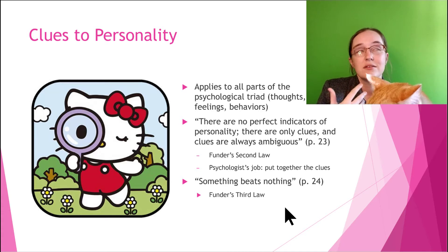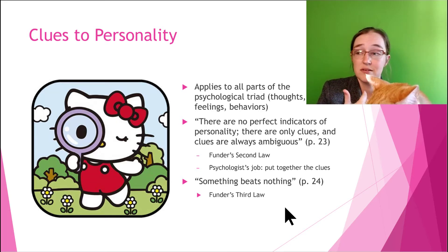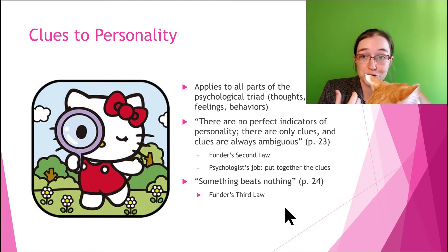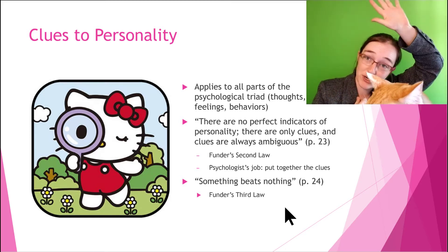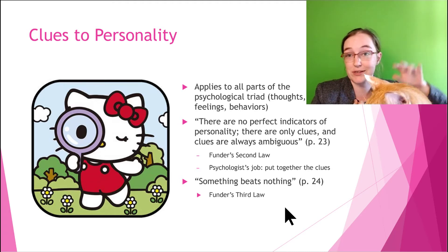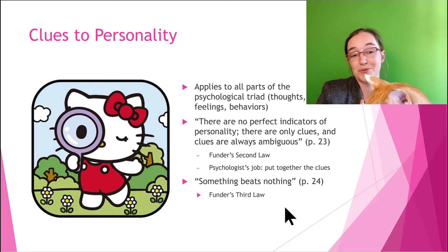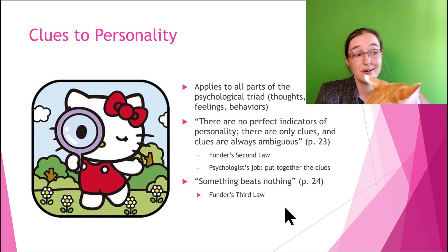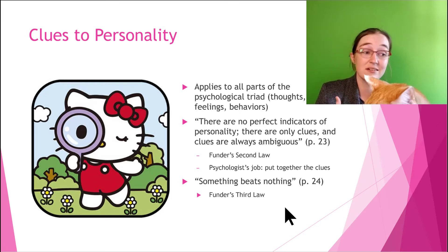We can see people's behavior, but you can't observe their latent extroversion score. You don't see a five floating above their head saying 'I'm extroverted.' So you have to infer it from evidence and clues all around you, and a psychologist's job is to put all those clues together and interpret them correctly.